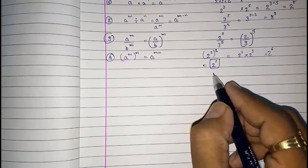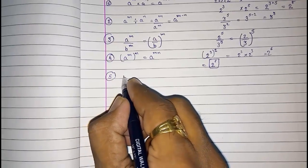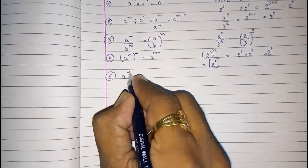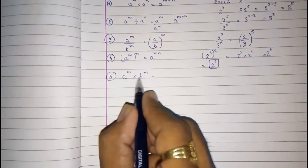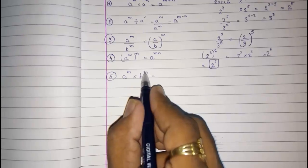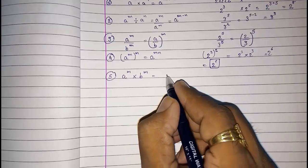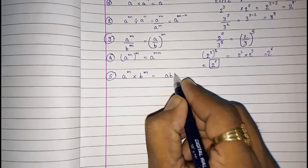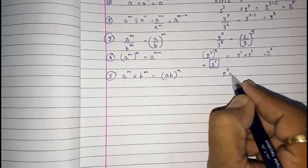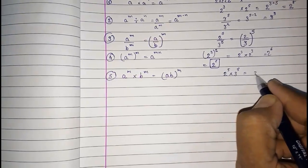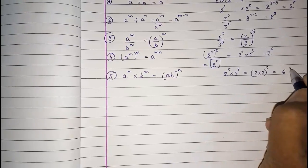The fifth law: a raised to m multiplied by b raised to m — if the bases are different but the power is the same, you can directly multiply the bases. So it becomes a times b, whole raised to m. For example, 2 raised to 5 multiplied by 3 raised to 5 can be written as (2 times 3) raised to 5, which equals 6 raised to 5.